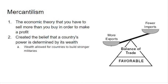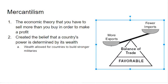This sets us up for mercantilism. This is a new economic theory that you need to sell more than you buy in order to make a profit. Seems reasonable — if you sell more than you buy, there is that profit, that extra money that you can use for whatever you would like. The fewer imports — things you're buying — and the more exports — things you're selling — is a balance of trade that is favorable. That means you have extra money.